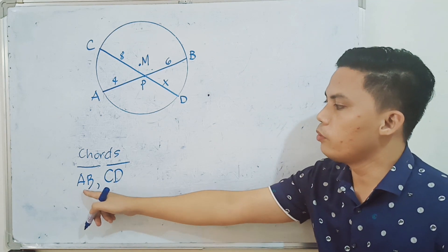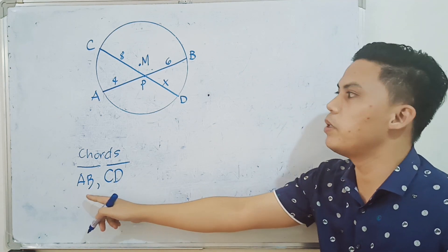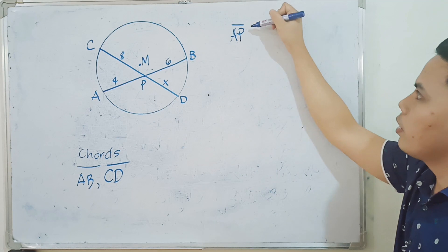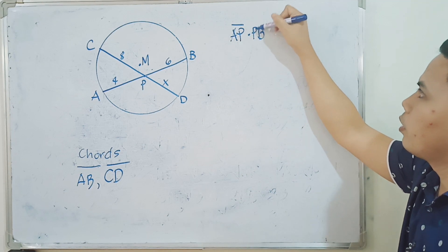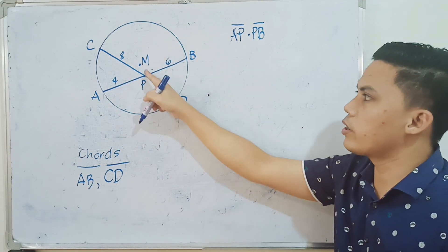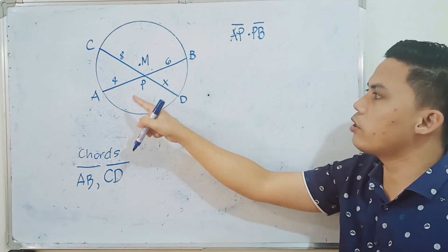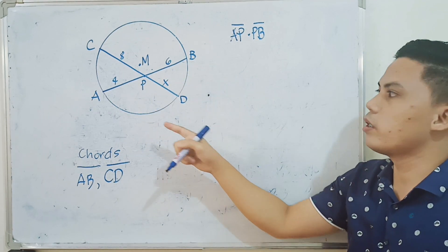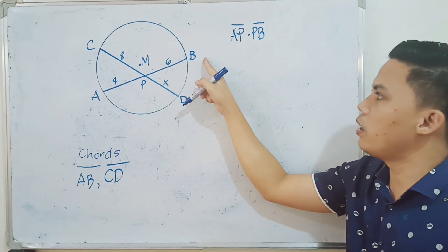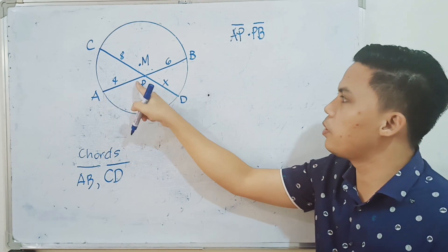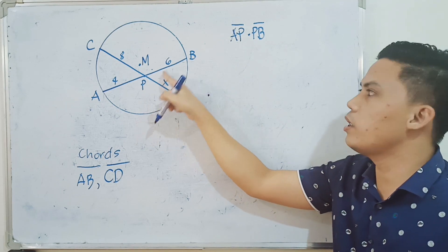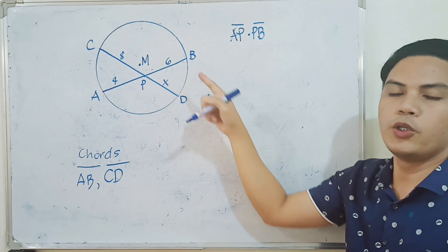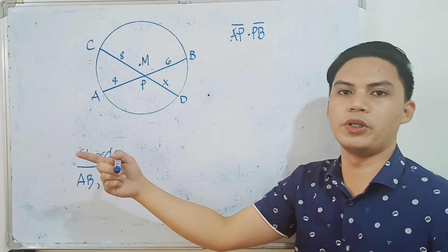So if we have chord AB, the two segments of chord AB are segment AP and segment PB. Our given is circle M, and the chords intersect at point P. Point P divides the chords into segments. So chord AB has two segments: AP and PB. The point of the theorem is that the product of AP and PB equals the product of the two segments of the second chord CD, which are CP and PD.